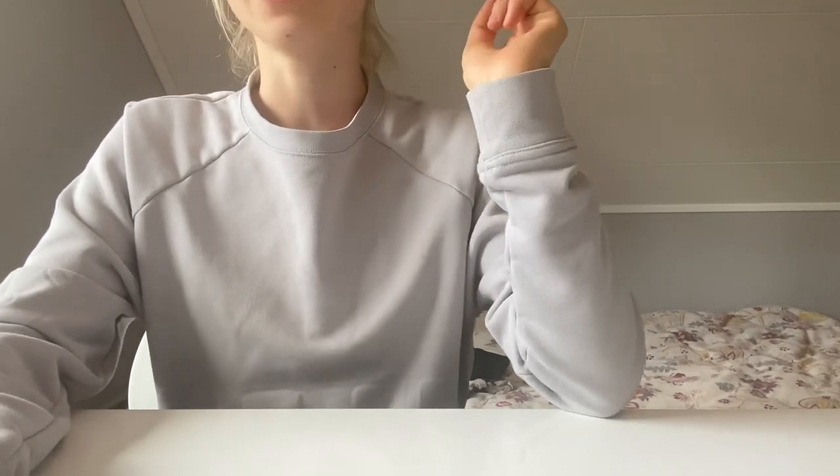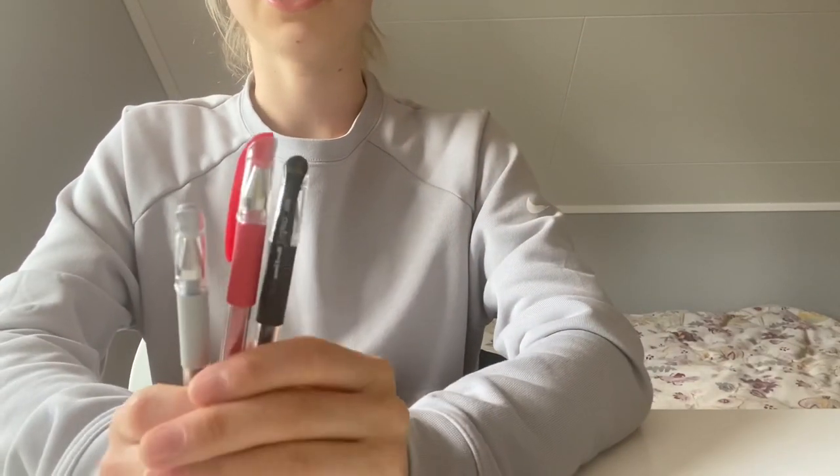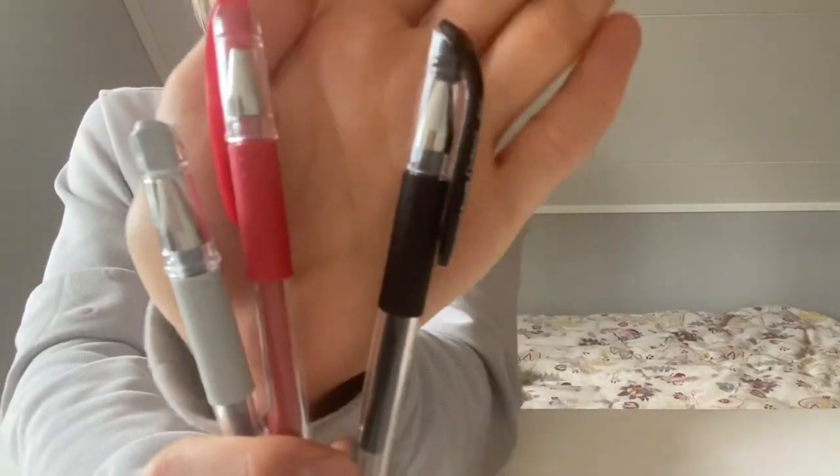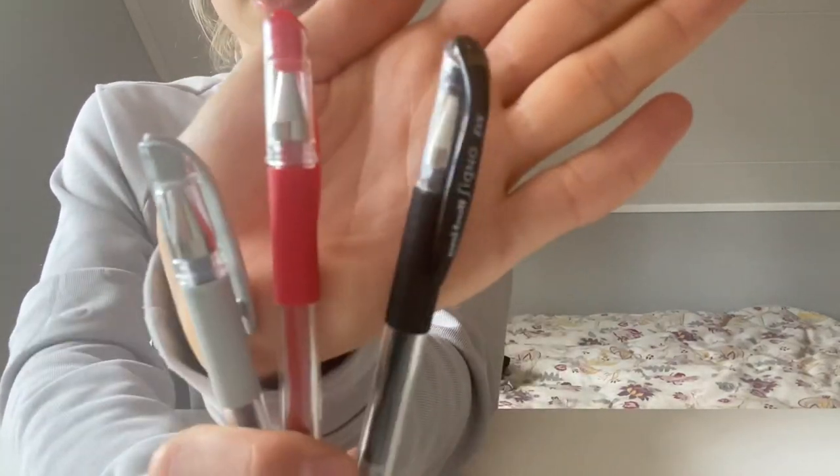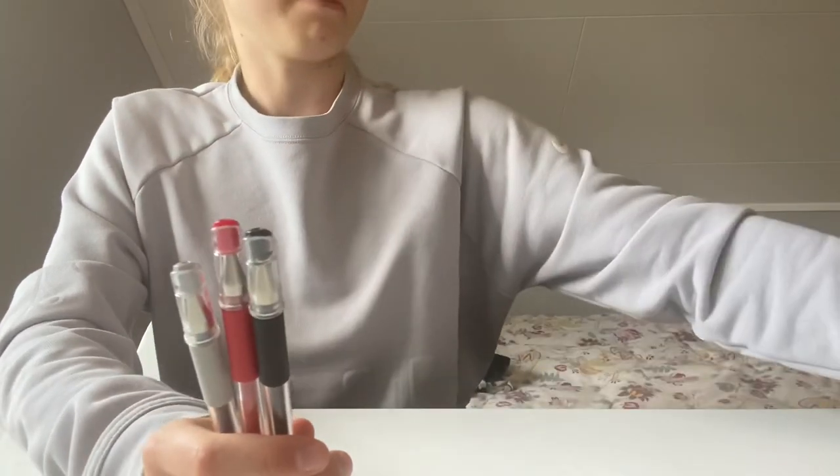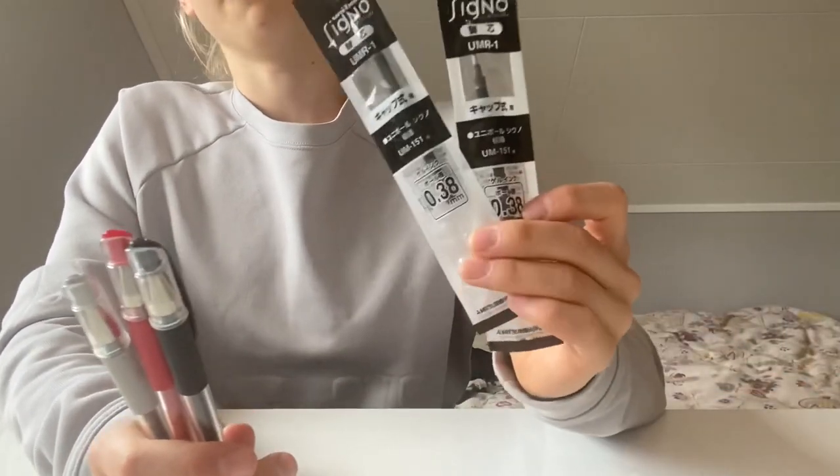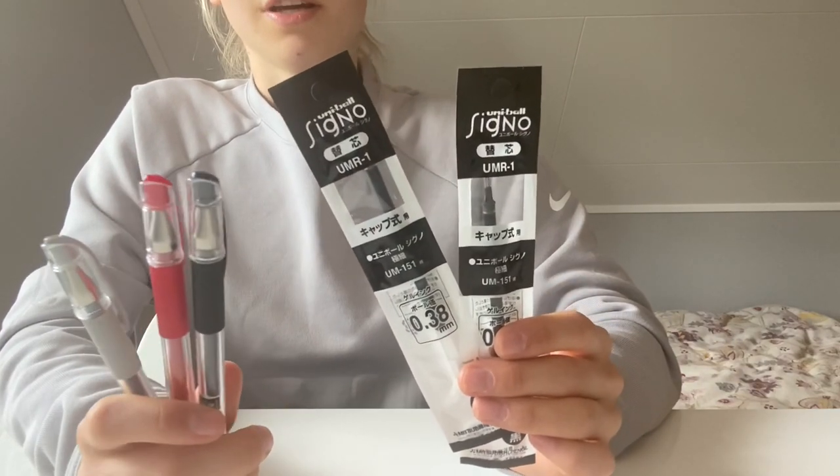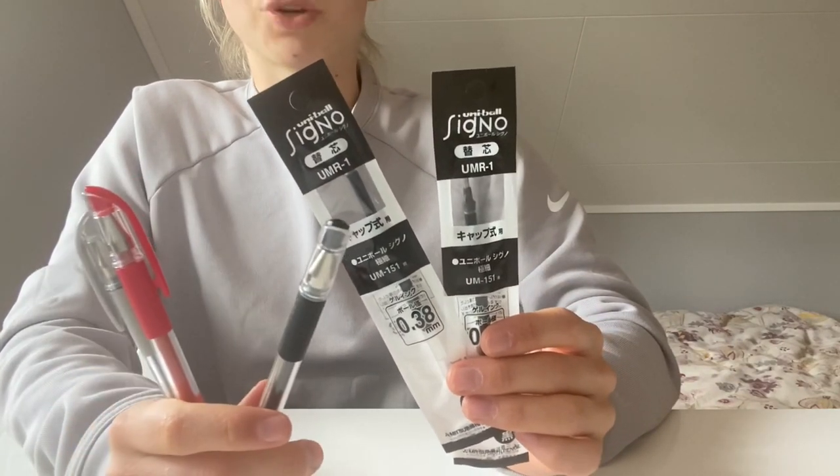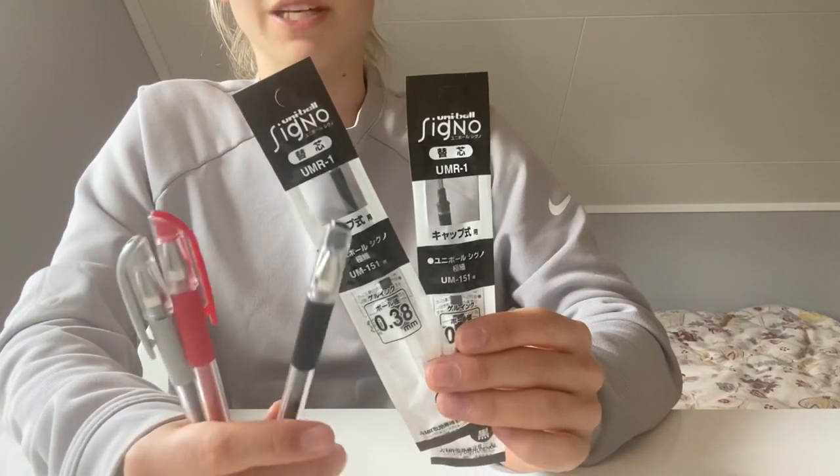I also bought a bunch of different gel pens and the first ones are the Uni-ball Signo DX which I got in the colors black, red, and gray. I also got a bunch of refills for the black one because I feel like I will finish these pens pretty fast.